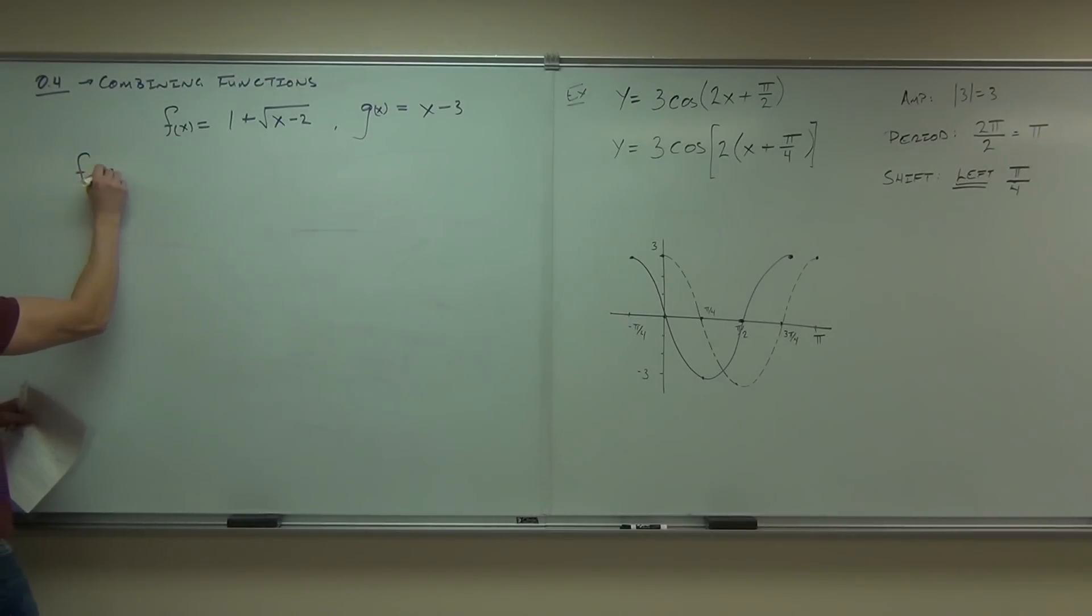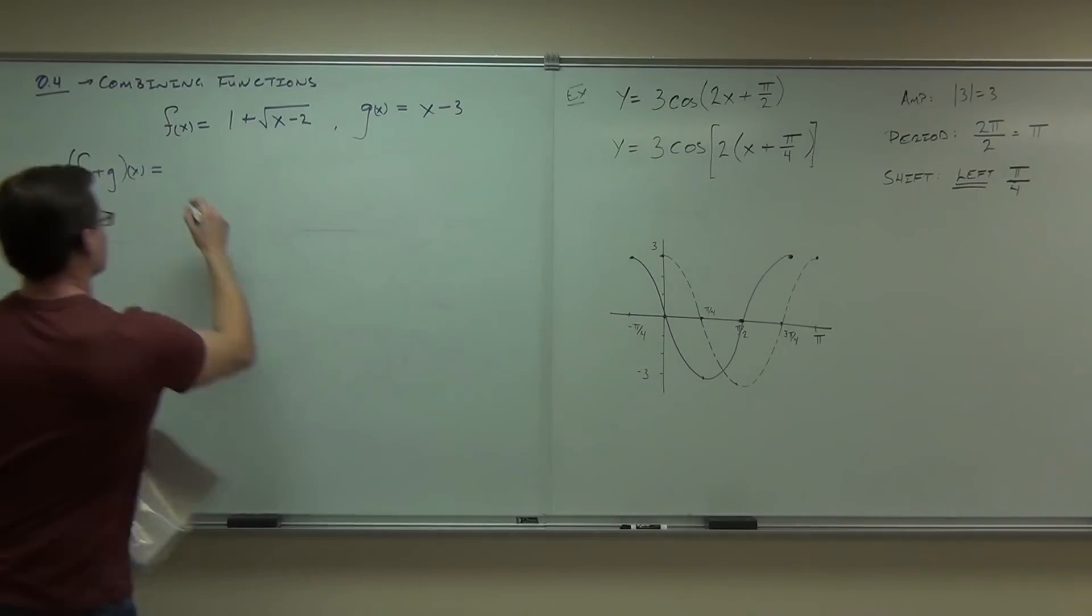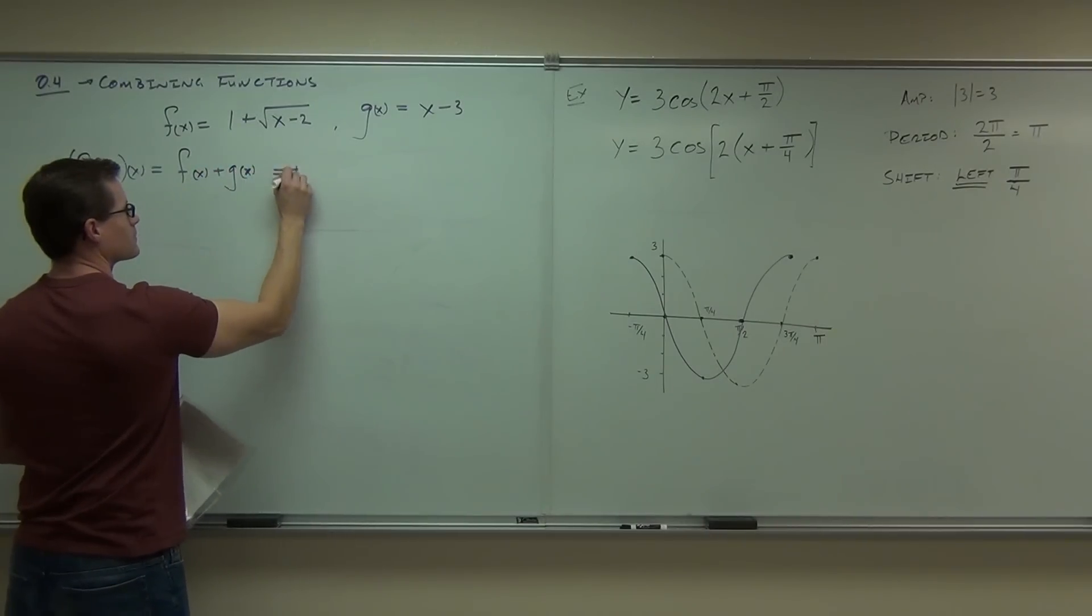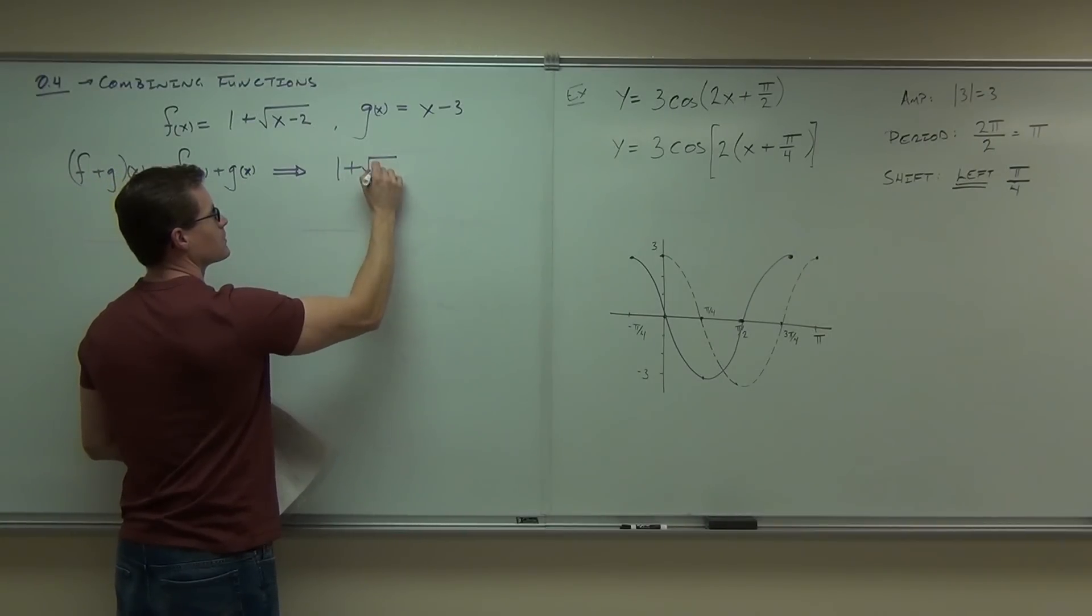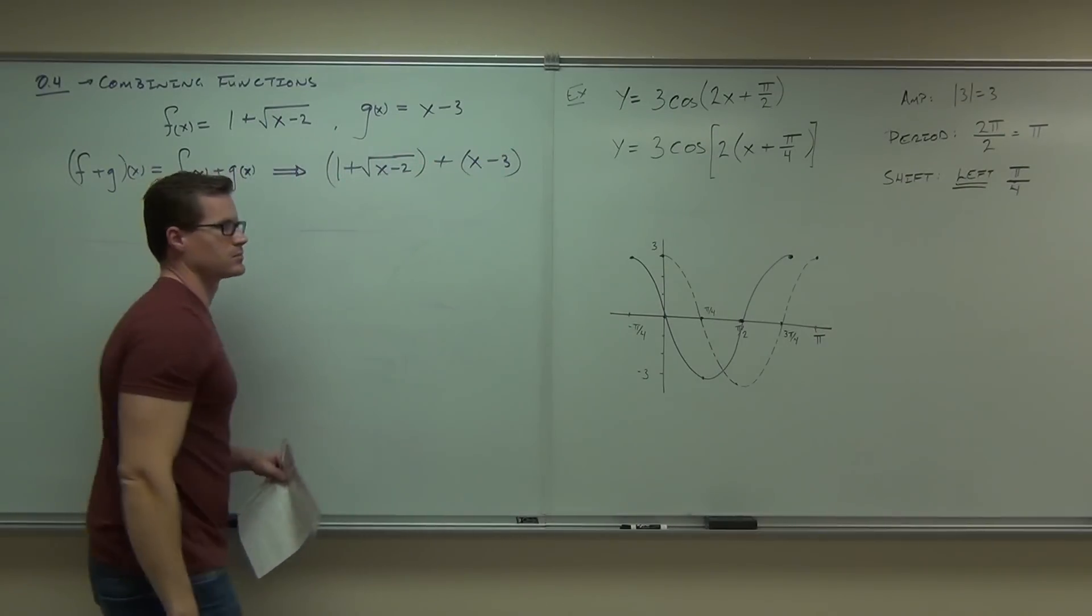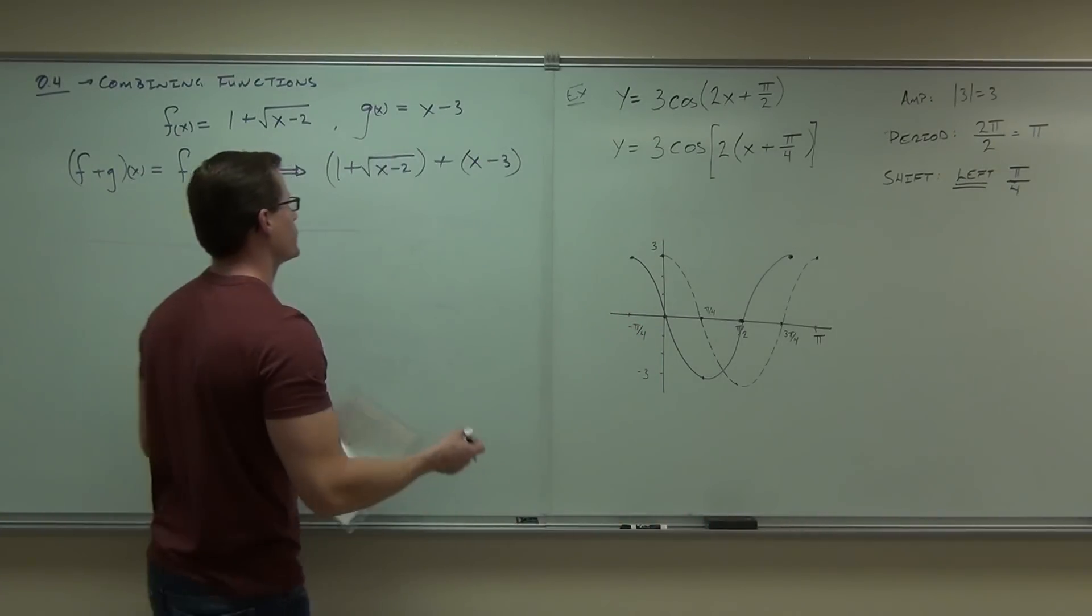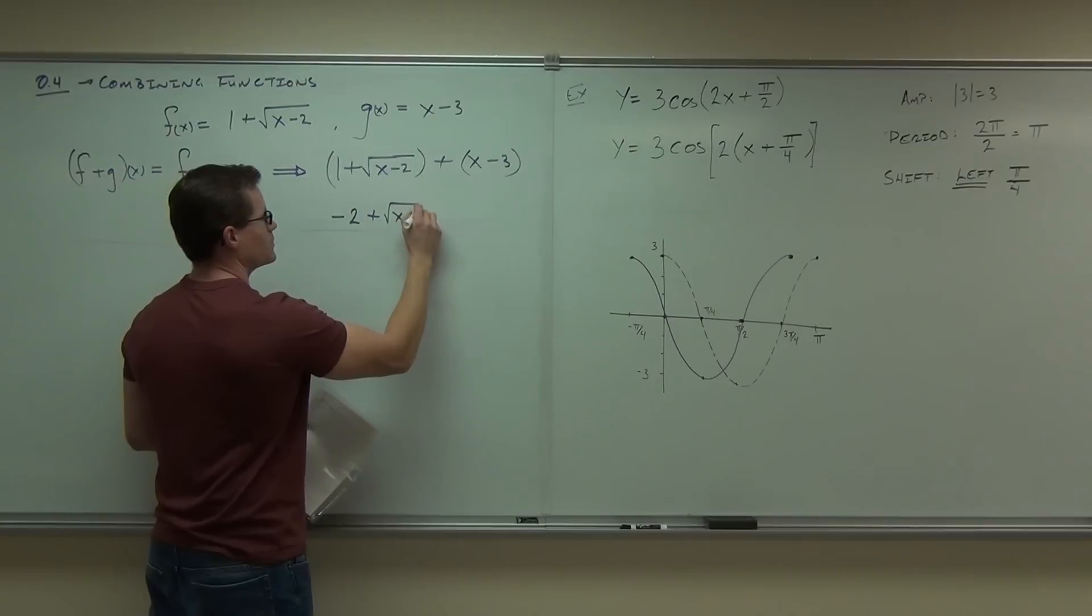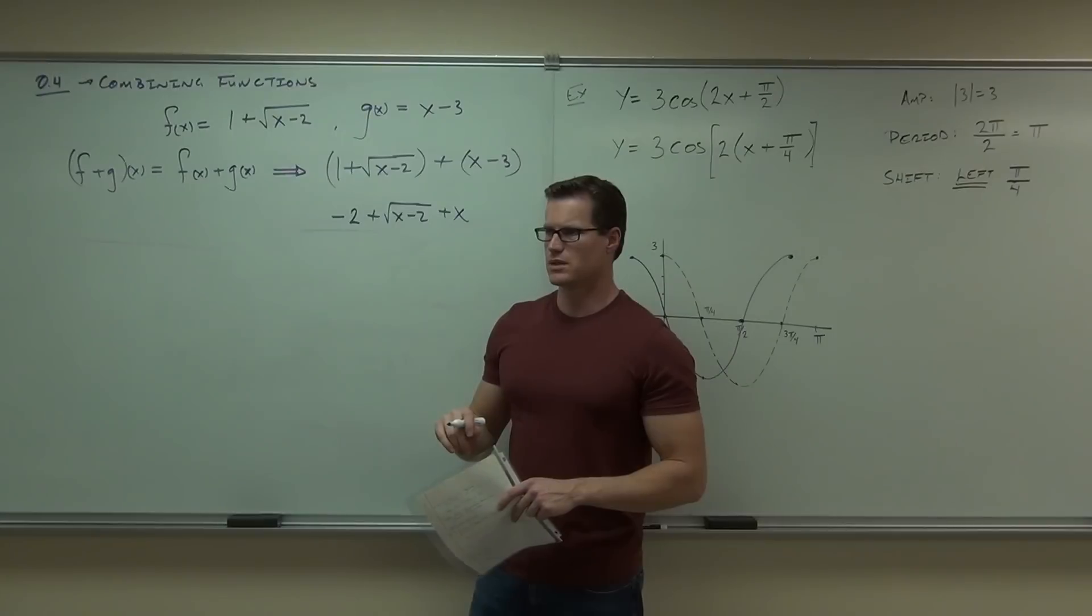If we want f plus g of x, what that means is we're just going to simply add the functions together, f of x plus g of x. In our case, that means we'd have 1 plus square root of x minus 2 minus 2 plus x minus 3. You'd get rid of your parentheses by distributing if you had to, and then combine some like terms. In our case, we should be getting negative 2 plus square root of x minus 2 plus x. Can you verify that that's the right answer?